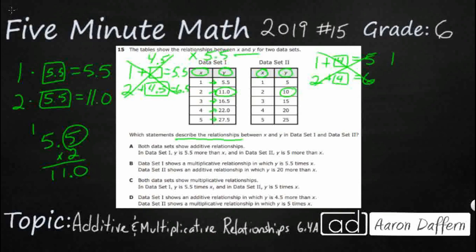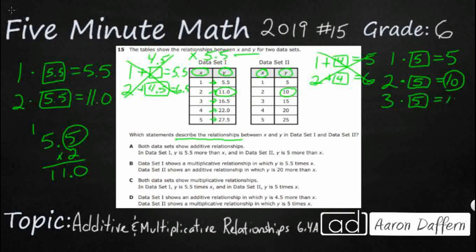So it looks like it's going to be another multiplicative relationship. 1 times what equals 5? Well, 1 times anything is itself, so that's going to have to be 5 — that's the identity property of multiplication. Let's see what happens with 2: 2 times 5 is 10. Yes, we are good to go there. Let's extend it a third time just to make sure: 3 times 5 equals 15 — that's good. And 3 times 5.5 over in data set 1: I'll add another 5.5 to the previous product of 11 to get 16.5. So we are good.